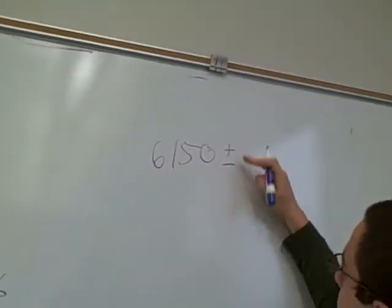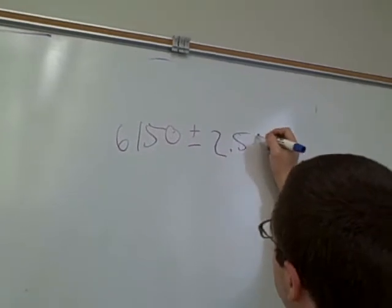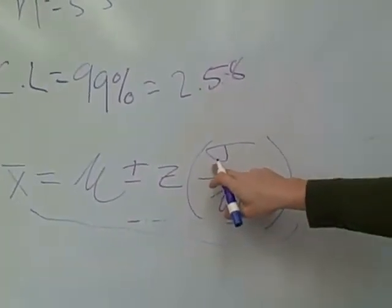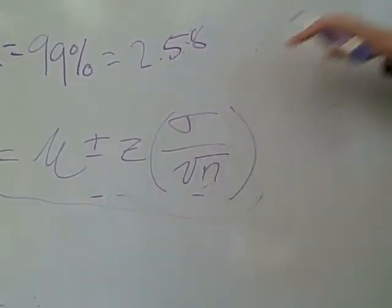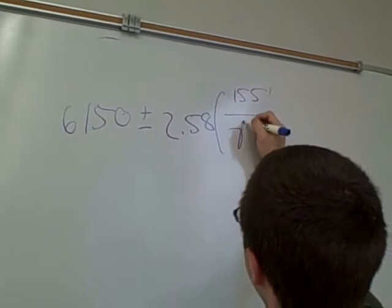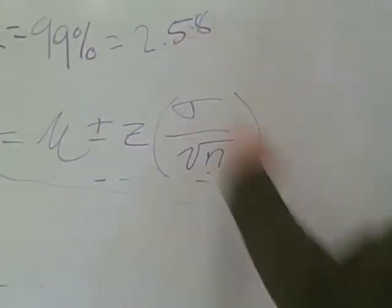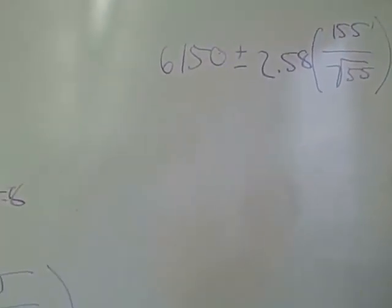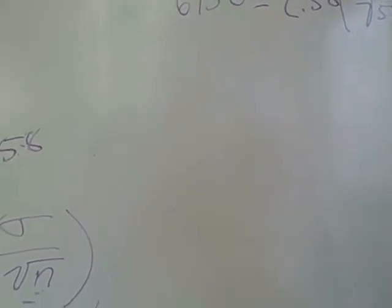So again, 6,150 plus or minus 2.58 parentheses. Our standard deviation is 155 divided by the square root of n, which is 55. So now we have our equation. Now my partner here is going to solve it for you.